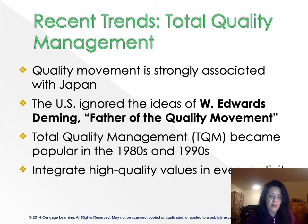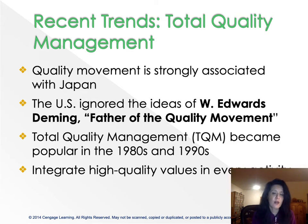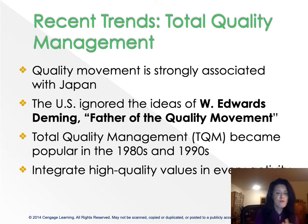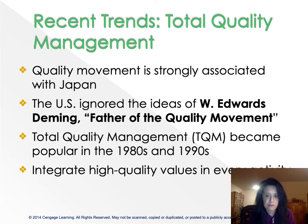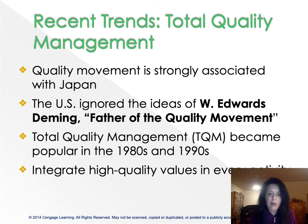The third approach is total quality management. The total quality management perspective focuses on managing the total organization to deliver the best quality to customers. This movement is strongly associated with Japan. Initially, the United States focused too much on the classical perspective and the scientific approach — Fordism — so we ignored the ideas of Edwards Deming, who was the father of the quality movement. Deming was embraced in Japan, which then became the world's second industrial power after the United States.